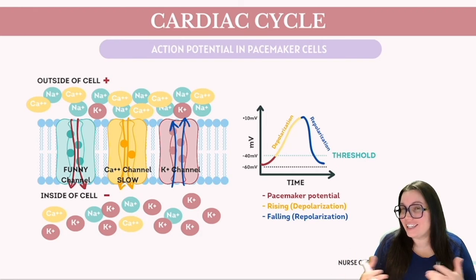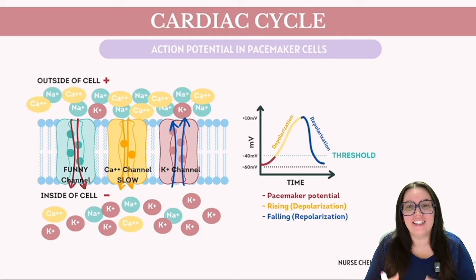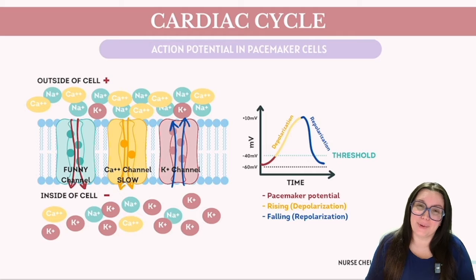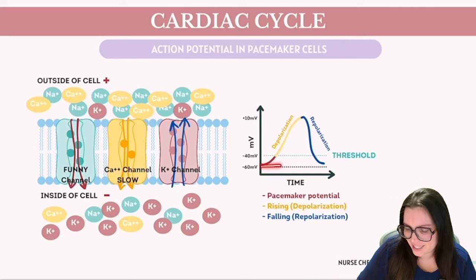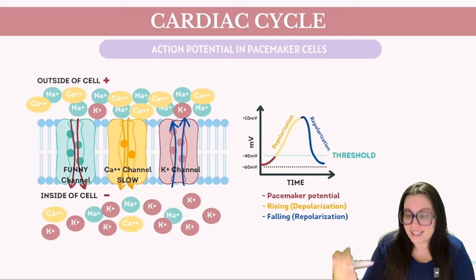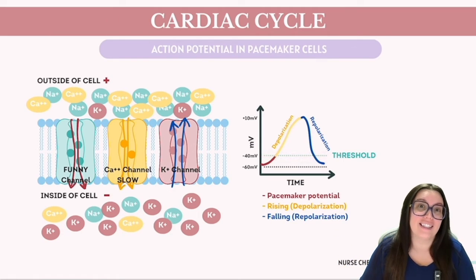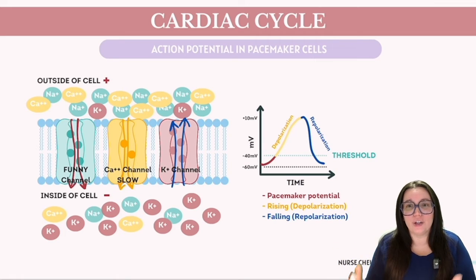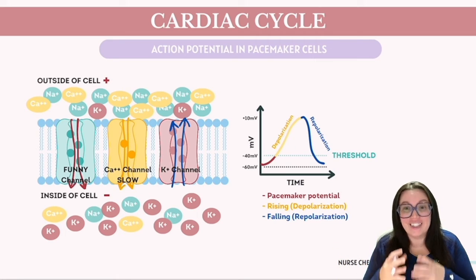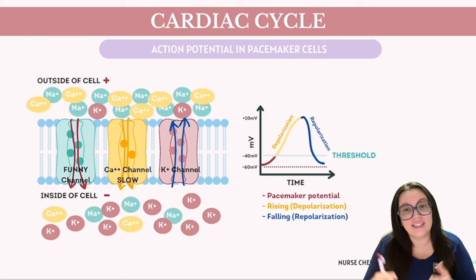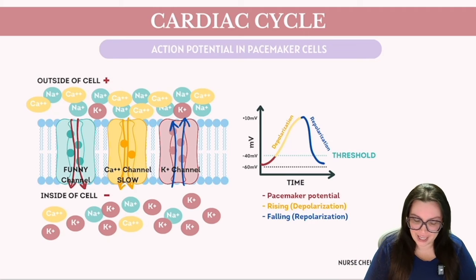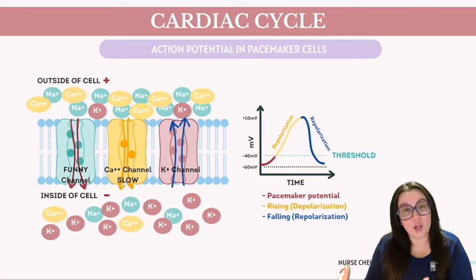The SA node's pacemaker cells generate roughly 80 action potentials per minute, each initiating a heartbeat, leading to an average heart rate of approximately 80 beats per minute. Unlike other cells, pacemaker cells lack a stable resting potential — their voltage begins around negative 60 millivolts and gradually increases until it hits the threshold at negative 40 millivolts. This unique behavior is attributed to funny currents, exclusive to pacemaker cells, which activate when membrane voltage dips below negative 40 millivolts, facilitating a gradual sodium entry into the cell.